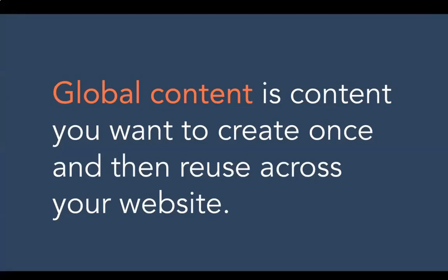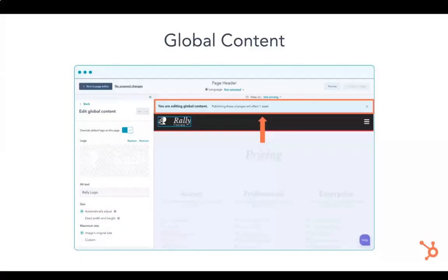The last concept before we get started is global content - content you create once and reuse multiple times across your website. A great example is your website's header and footer. You create these elements once and use them consistently across your whole site. In the CMS, you can actually edit global content right from the page editor. When you publish those changes, they propagate across your entire site - so if you have 150 pages and you change your logo in the header, it changes across all 150 pages.